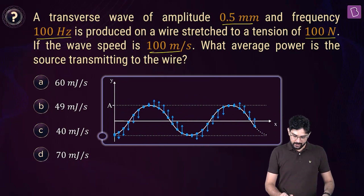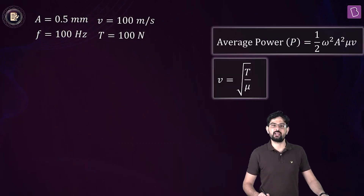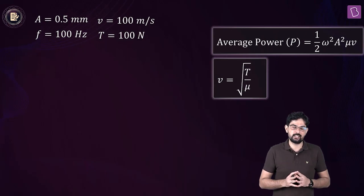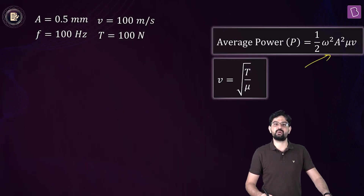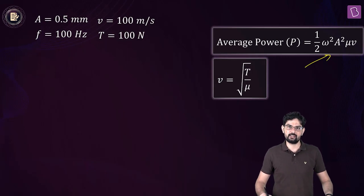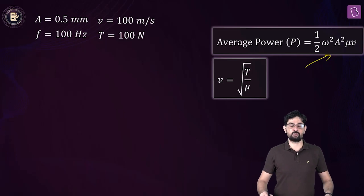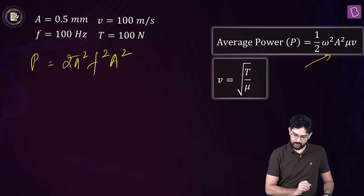The average power transmitted through any point of the string, which is the same as the average power transmitted by the source, is given as half omega squared A squared mu into v. And if you write omega as 2 pi f, then the average power is 2 pi squared f squared A squared mu into v.